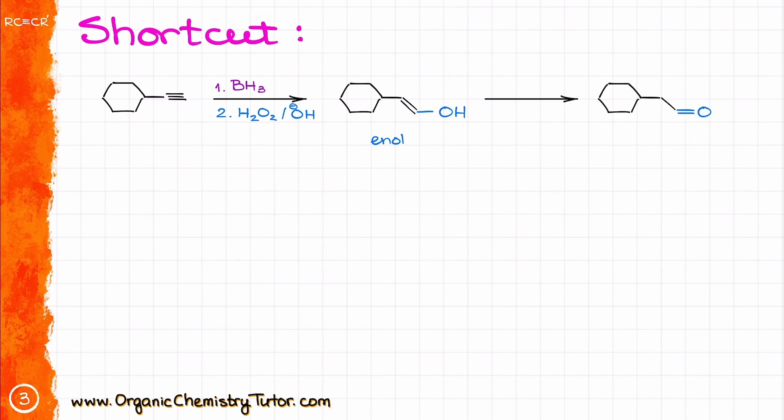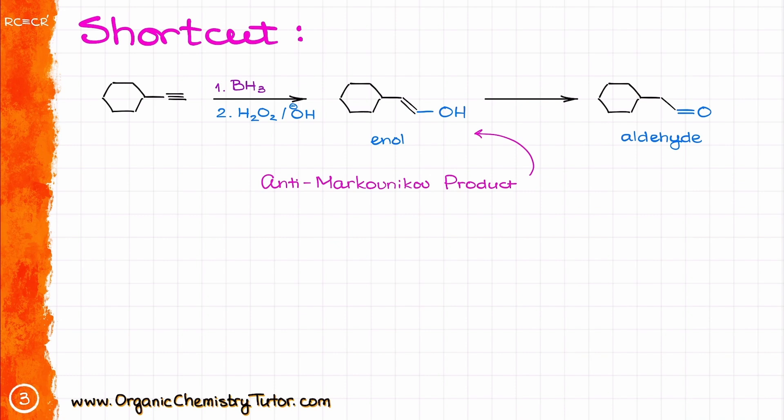Finally, using the trick I told you about in the hydration of alkynes video, we are going to make our final product by erasing this double bond and making the carbonyl, which gives me the aldehyde as my final product. And since my OH group — and consequently the oxygen of the carbonyl — ends up on the less substituted atom, this type of product is often referred to as an anti-Markovnikov product. In other words, we get our OH or O on the less substituted carbon, while the hydrogen is on the more substituted carbon. Remember that even though the hydrogen is not shown here, it is an implicit hydrogen — it is still there.